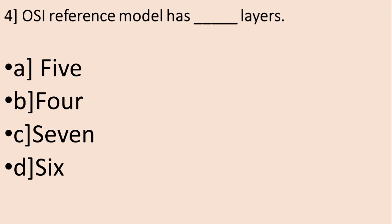Question number 4: The OSI Reference Model has dash layers. A. 5, B. 4, C. 7, D. 6. The correct answer is C, that is 7.